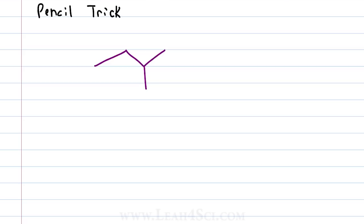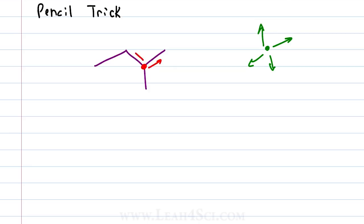Imagine that my stylus is the pencil, and you put it down on a carbon atom. What you want to do is look at that pencil point and see what is coming out of it. Specifically, we're looking for bonds to carbon atoms. If I want to know the substitution of this carbon here, all I do is put down my pencil and look at how many lines come directly from that point. I see one, two, three — three lines coming out of it means three carbons attached, making this a tertiary carbon.